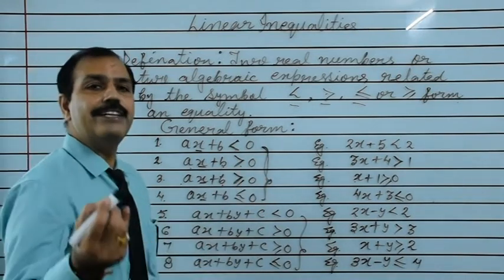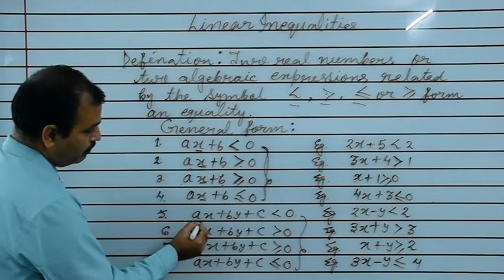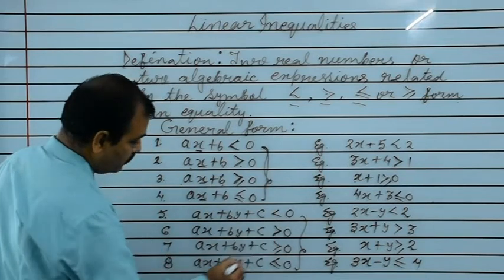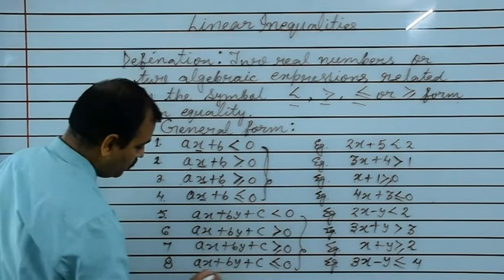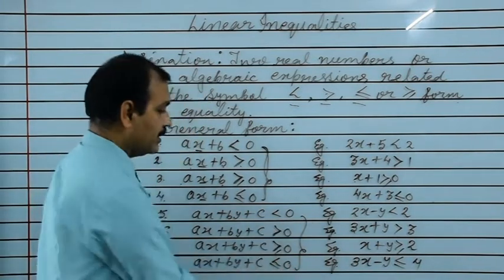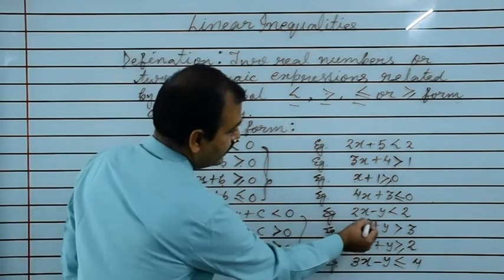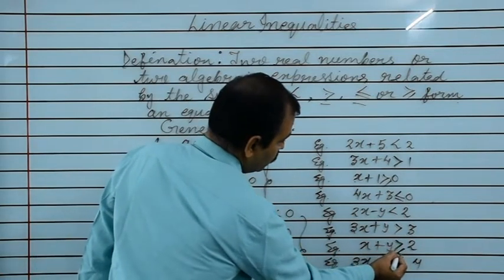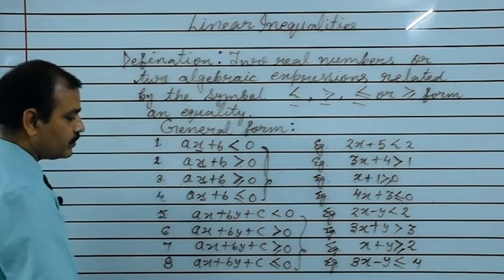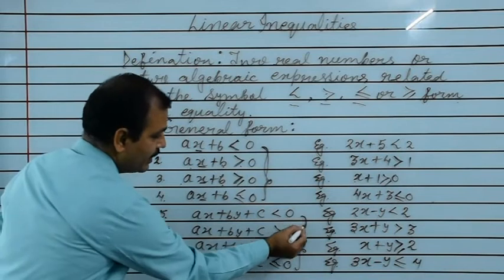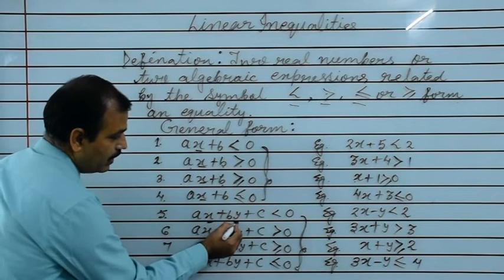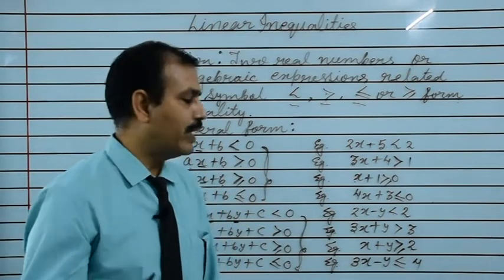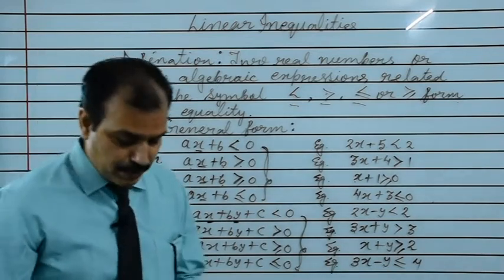Now, linear inequality in two variables. Two variables means two variables x and y. General form: ax plus by plus c is less than 0, ax plus by plus c is greater than 0, ax plus by plus c is greater than equals to 0, ax plus by plus c less than equals to 0. Examples: 2x minus y less than 2, 3x plus y greater than 3, x plus y greater than equals to 2, 3x minus y less than equals to 4. So linear inequality in one variable and two variables is clear.